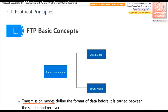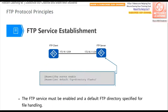FTP has two transmission modes. The first is ASCII mode, which is used to send text files. The second is binary mode, which is used to send programs or images — binary files. If you want to transfer programs or images, you must use binary mode.